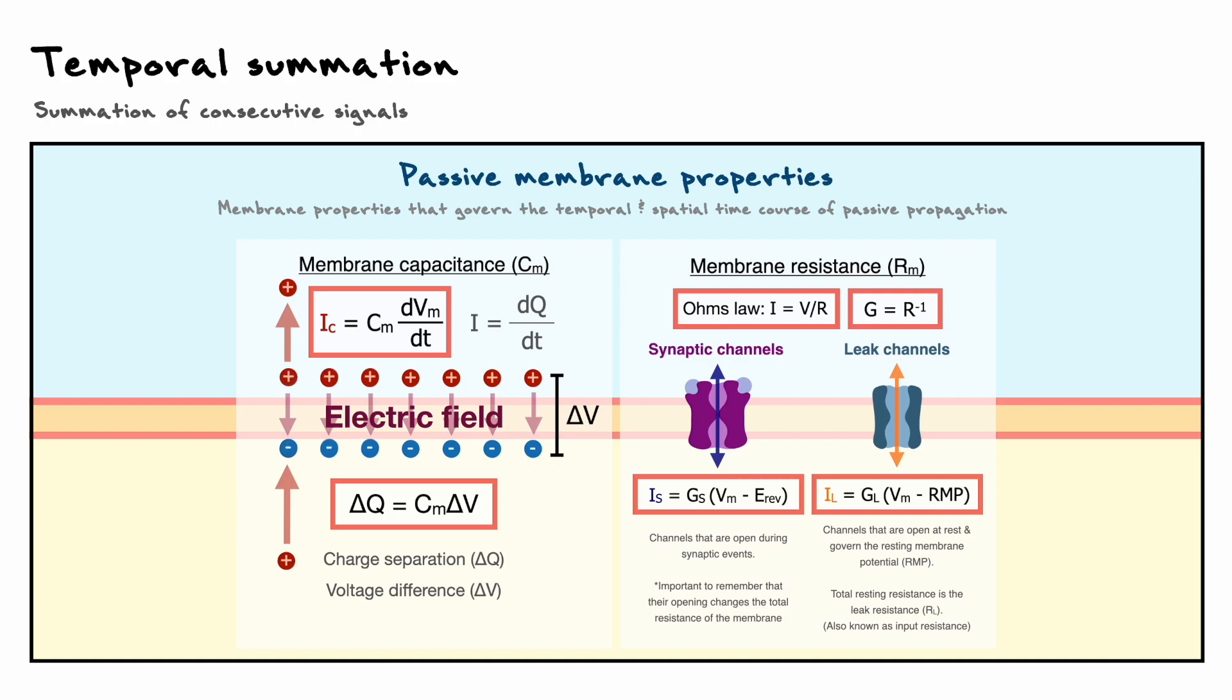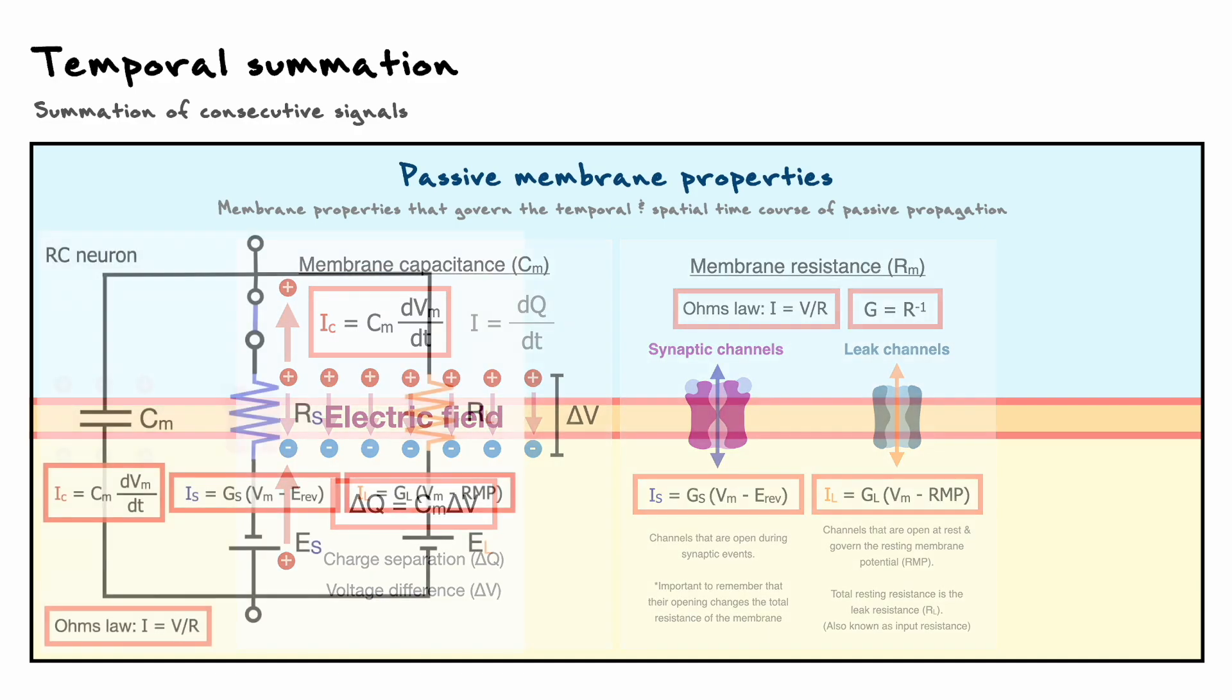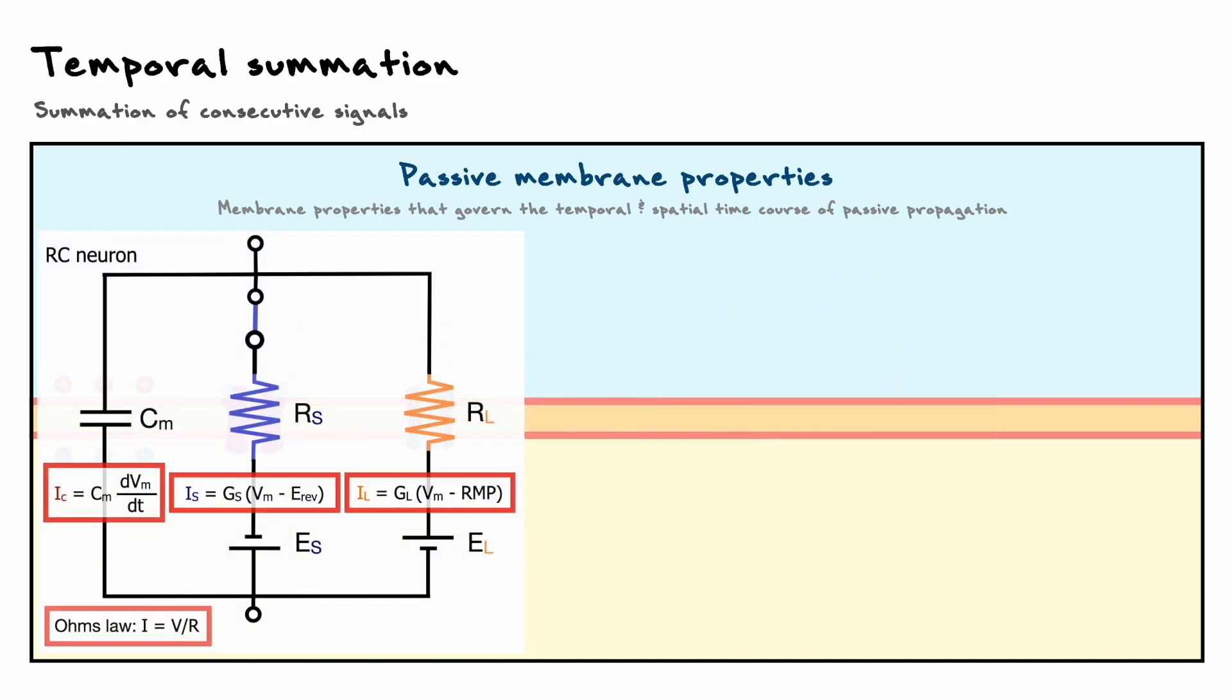Another tool that will be relevant for us to understand how temporal summation occurs is to have the equivalent circuit model of the synapse. This circuit basically models the neuron as an RC circuit, which is very convenient for us because from that, we will be able to determine equations that will allow us to see how the membrane potential changes as a function of time based on our passive membrane properties.